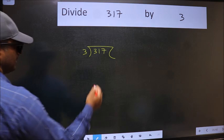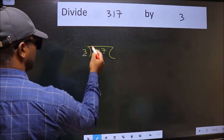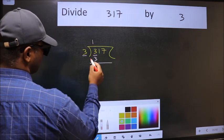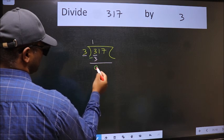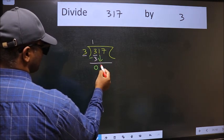Next, here we have 3 and here also 3. When do we get 3 in the 3 table? 3 once 3. Now we should subtract. We get 0. After this, bring down the beside number, so 1 down.